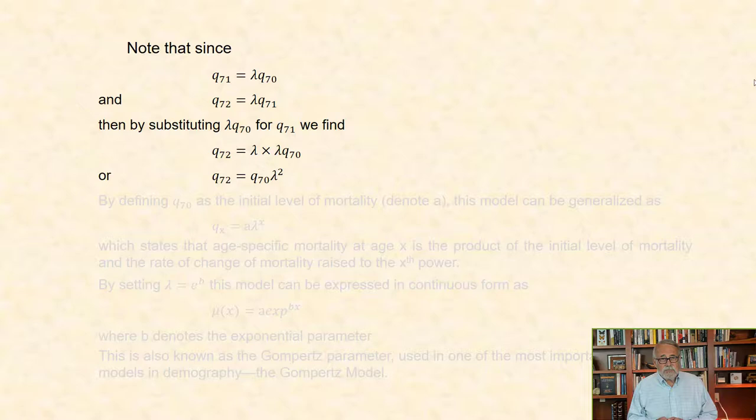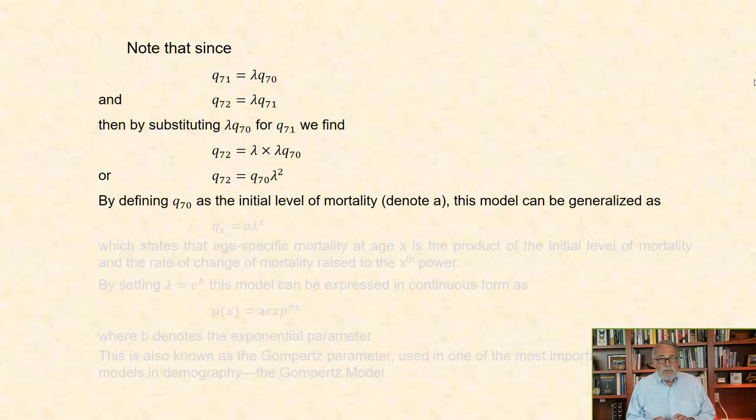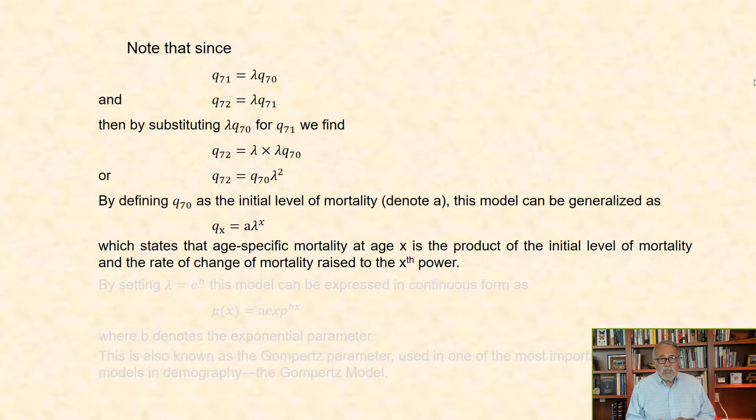By defining Q70 as the initial level of mortality, this model can be generalized as Qx equals lambda raised to the power x. In words, this model states that mortality at age x is the product of the initial level of mortality and the rate of change in mortality raised to the x power.